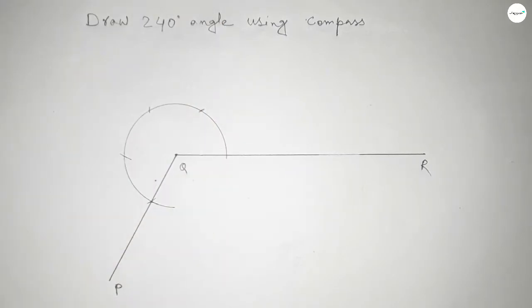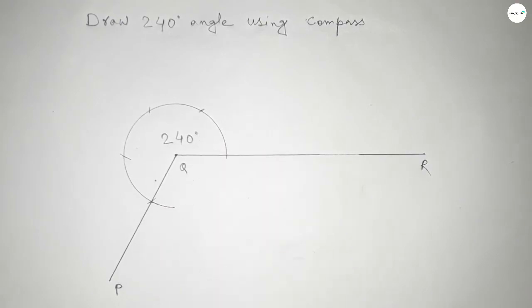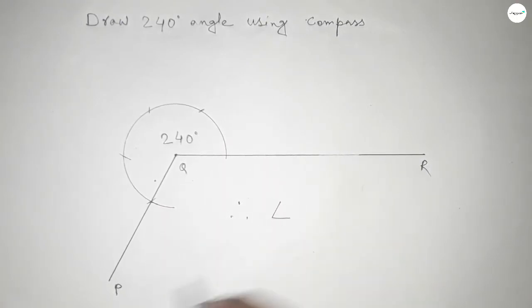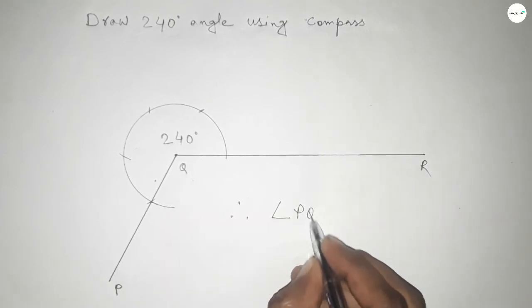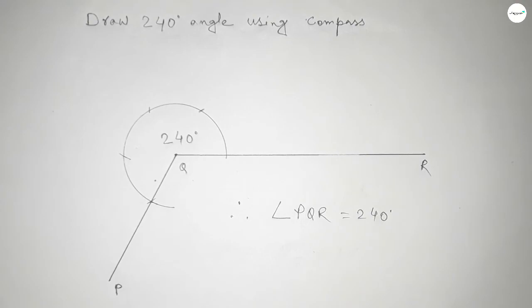...then we can get 240 degree angle. So this is 240 degree angle, therefore angle PQR equals 240 degrees. That's all, thanks for watching, please share it with your friends.